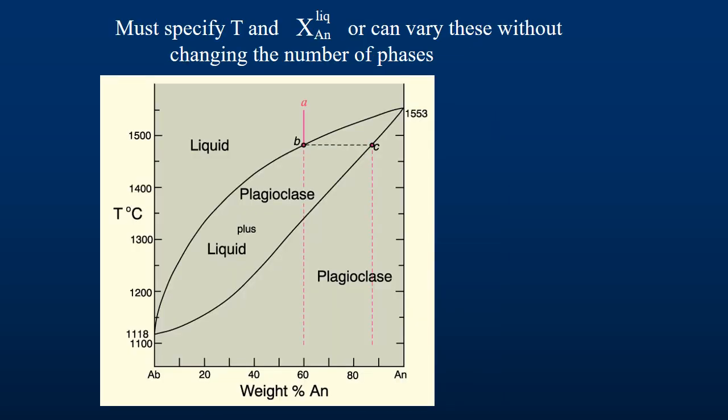Now, if we cool the system to 1475 degrees centigrade, point B, what happens? When we get to point B, plagioclase solid begins to crystallize, adding a phase to the system. However, the plagioclase that first forms has a composition at point C, or a composition of anorthite 87, a different composition to that of the melt. How does the phase rule help us understand what's going on at this point? Because C = 2 and φ = 2, our degrees of freedom equals 1. Now we must specify only one intensive variable to completely determine the system.